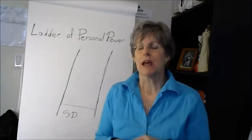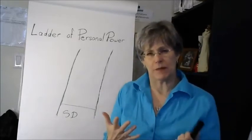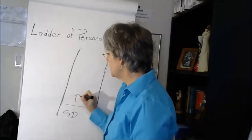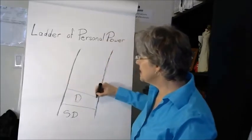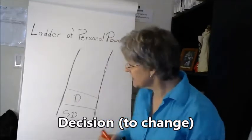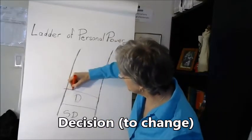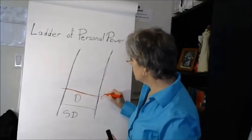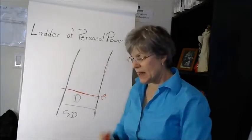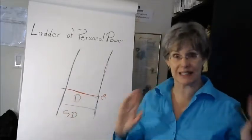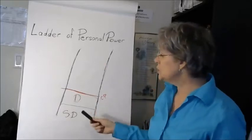So at some point something changes, and that's when they make the decision that they're going to do something about it, that they're going to take some kind of action. They make the decision to change. In fact, this is a critical point. This is where when people really get to this critical point, this is when they say I'm going to do something because this is no longer acceptable.